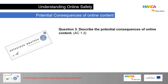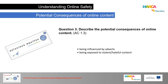Question 3 asks you to describe the potential consequences of online content. Remember, content could include being influenced by adverts and being exposed to violent or hateful content. The action verb is 'describe' — please don't just list the bullet points; I want to see some detail around the key features.